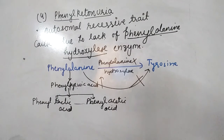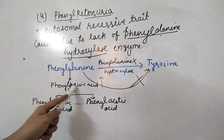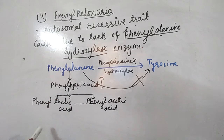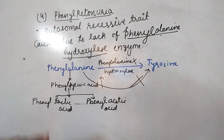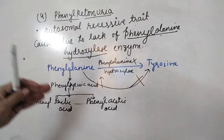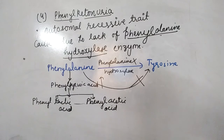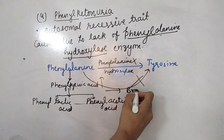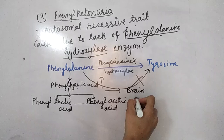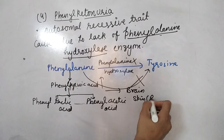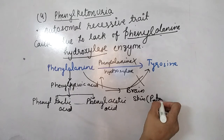Symptoms include mental retardation due to poor kidney absorption of these substances. When the level of phenylpyruvic acid is high after 4 weeks, the brain is damaged and the skin develops black patches.